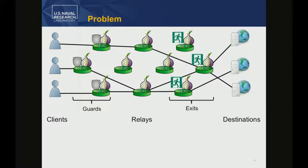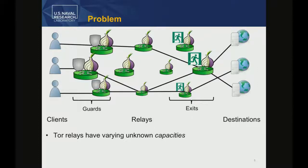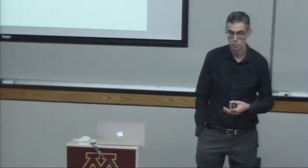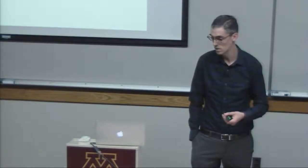TOR provides anonymous communication using a system architecture where you have users, a network of relays, and users construct circuits through a sequence of those relays to get to destinations. There are guards that users choose for their first hop always, and exits that allow users to exit the network and go to a destination. The TOR relays are not uniform in terms of the resources they provide—some relays have a lot of bandwidth and some have relatively less bandwidth.